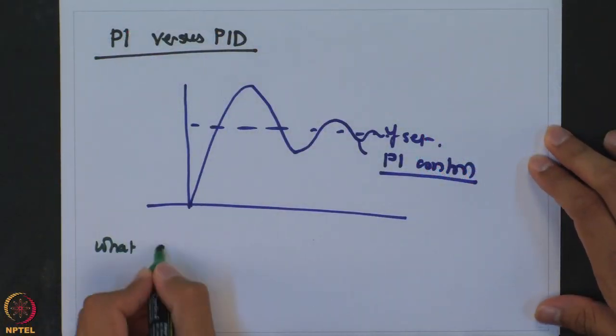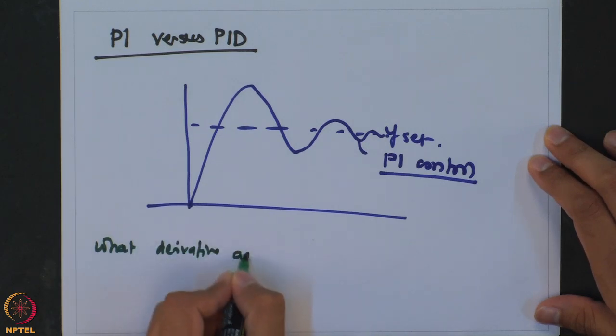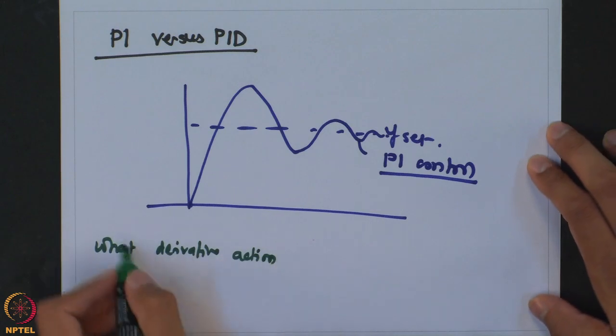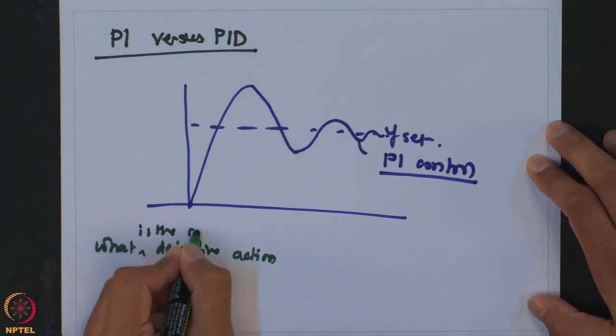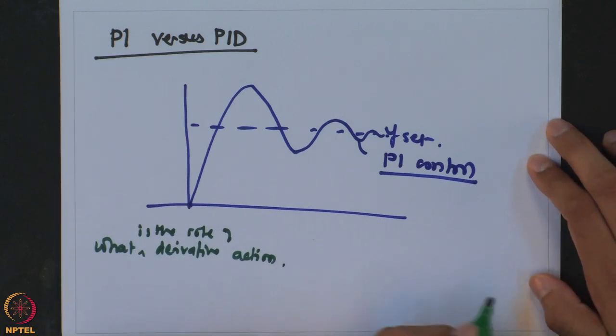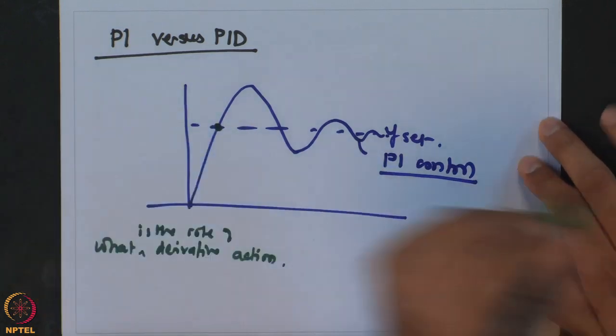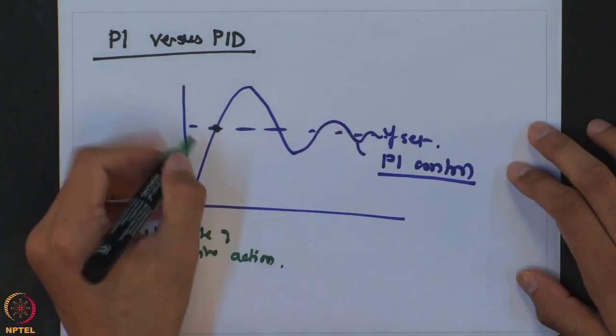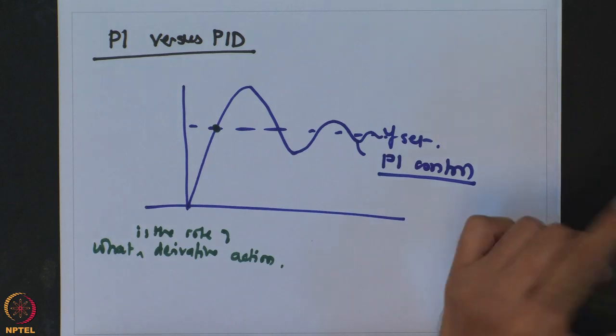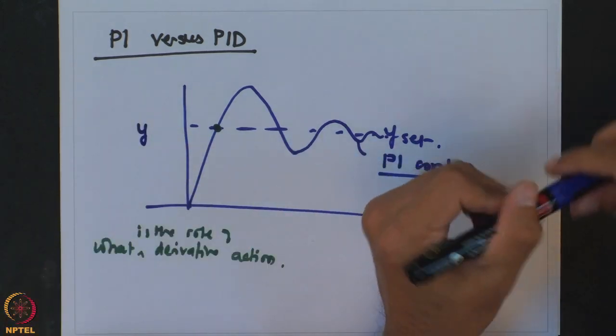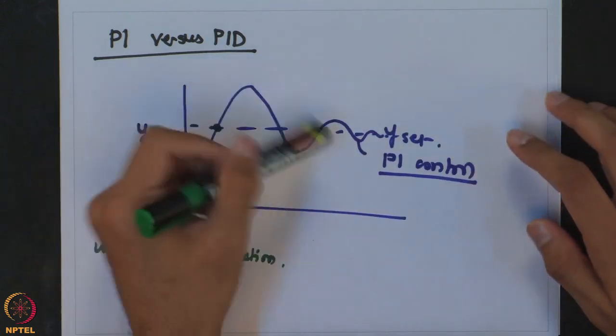The integral action always tries to compensate for the past errors more than the current error, and in that way you end up having oscillations around the set point. Now let us look at what the derivative action will do. Consider this particular point at which we have the instantaneous value of the output — y has reached the set point, but the system has not stabilized yet; it is still going to oscillate.